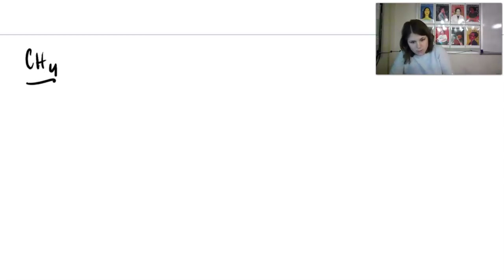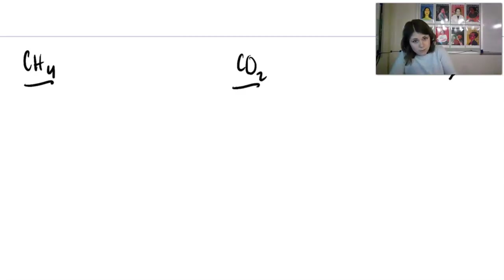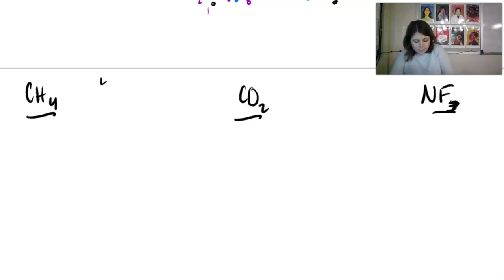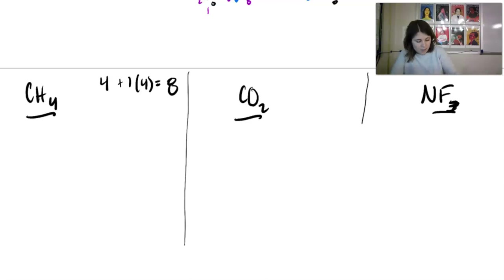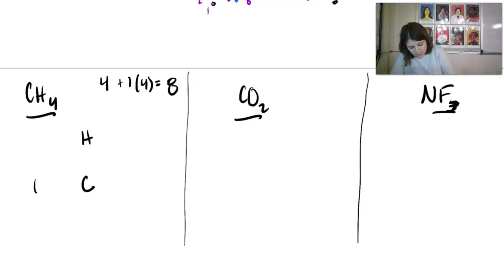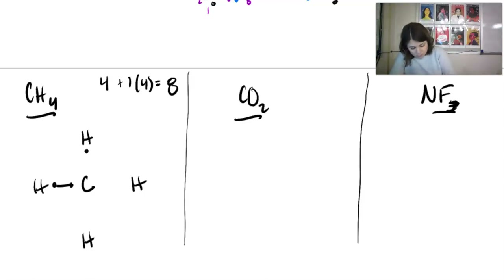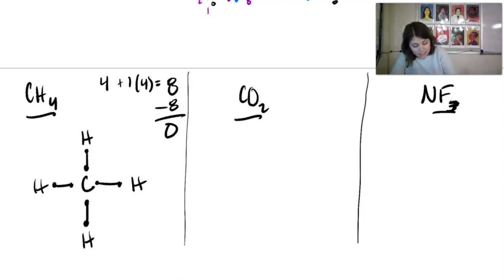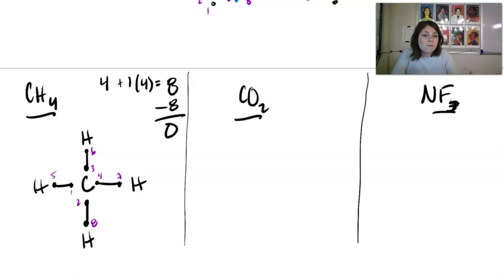Let's do more examples. For CH4: carbon has four valence electrons and each hydrogen has one, with four hydrogens, giving eight total. Hydrogen will never be your central atom, so put carbon in the middle with the four hydrogens around it. Draw single bonds throughout — four bonds times two electrons equals eight, so we subtract eight and have zero left. Carbon reaches eight sharing and each hydrogen reaches two, so we're done.